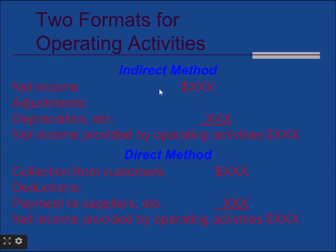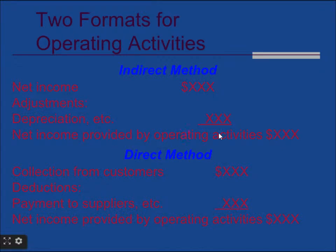In short, this is the difference between the two formats for operating activities. In the indirect method, it always starts with net income and then we deduct the non-cash operating activities — for example, depreciation, which is a non-cash transaction — and then we calculate the net income provided by operating activities. In the direct method, we find out all operating activities, list them one by one, and add or subtract together to get the net cash provided by operating activities.